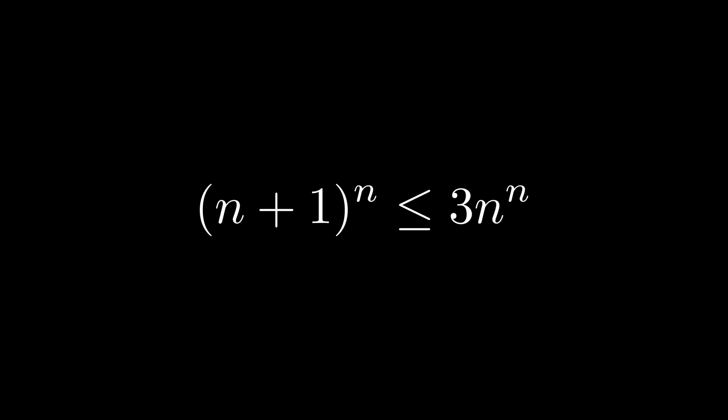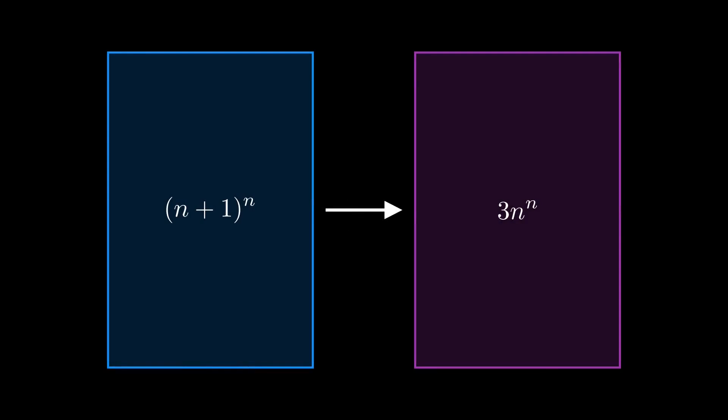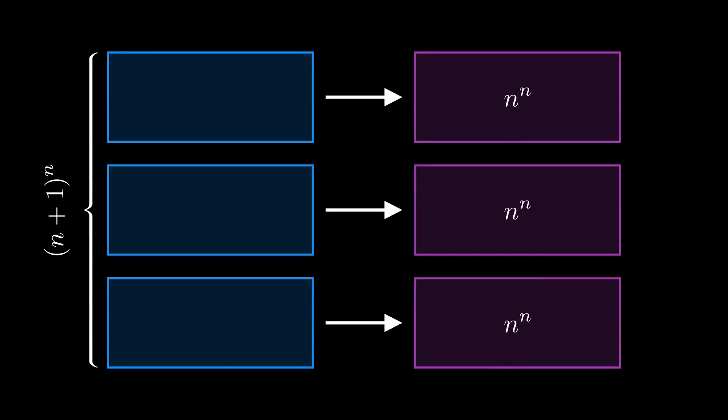So how would we go about proving something like this inequality for all n? Well, there are lots of possibilities, but we're going to do it by building sets that have the same size as each side of our inequality, and then we'll compare those sets. We're going to construct a set of size n plus 1 to the n, and show that we can cut it up into three parts, each of which is smaller than, or equal to, another set of size n to the n.